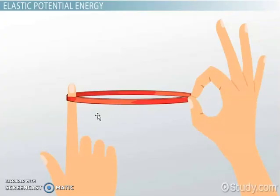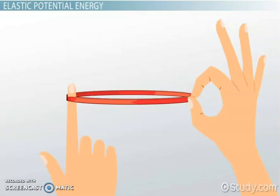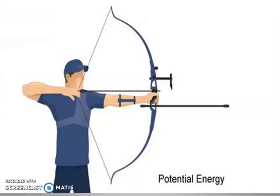If we look at the next example, you have a rubber band. When you stretch the rubber band, it stores elastic potential energy. We call that stored energy potential energy. If you release the rubber band, it will move — and at that point it will not be potential energy but kinetic energy.